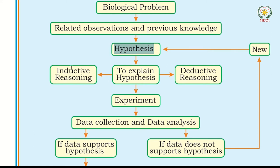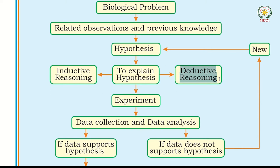We have two types of reasoning to explain a hypothesis: inductive and deductive reasoning. In inductive reasoning, we go from specific to general. For example, if a human is made from cells, then all organisms will be made from cells — plants, animals, fungi, algae — all will be made from cells. We then have to prove it through experiment.